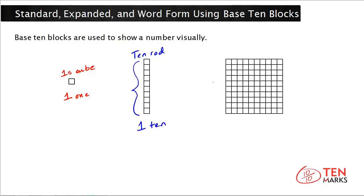Now when you take a grid that has 10 rows and 10 columns, there are 100 ones within here, so this is called a hundreds flat, and it represents 100.